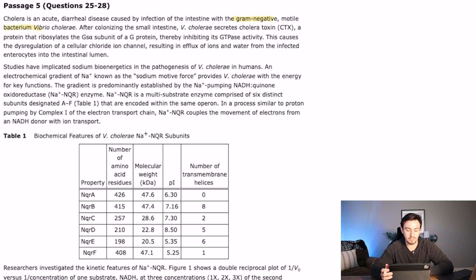So after colonizing the small intestine, V cholera secretes cholera toxin, CTX, a protein that ribosylates the GS-alpha subunit of the G-proteins. G-proteins, that's a high-yield science, right? G-proteins, how they work, they're coupled receptors, and that inhibits its GTPase activity. So that's kind of a big relationship there. So let's go ahead and draw that out. We see that our cholera toxin, once it gets into the small intestine, ends up ribosylating.